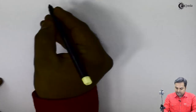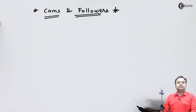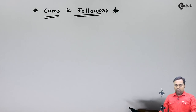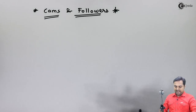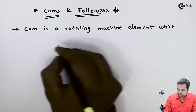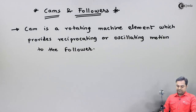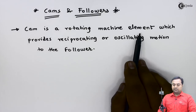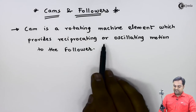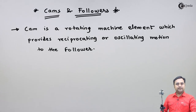Let us start with the new chapter in theory of machines. The name of the chapter is cams and followers. The definition: a cam is a rotating machine element which provides reciprocating or oscillating motion to the follower. I can explain it with a diagram.